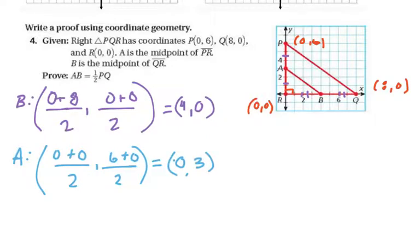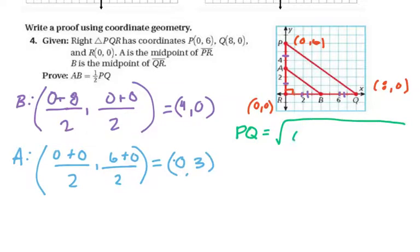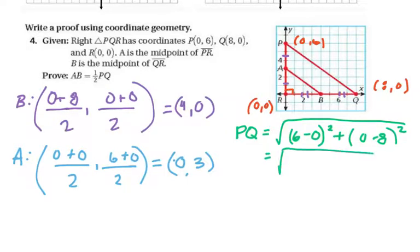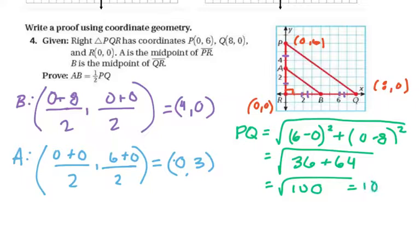Now we know the coordinates of A=(0,3) and B=(4,0), and also P=(0,6) and Q=(8,0), so we use the distance formula. For PQ: the square root of (6−0)² + (0−8)² = √(36 + 64) = √100 = 10. So PQ is 10.